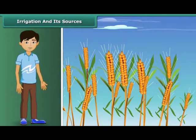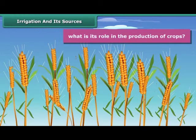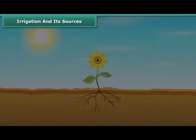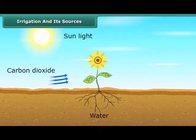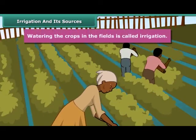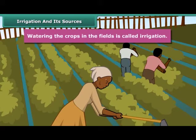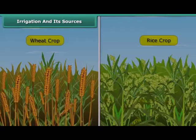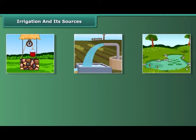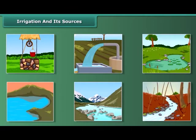Water is very essential for the production of crops. Germination of seeds cannot take place under dry conditions. Water is absorbed by plant roots, along with minerals and fertilizers. Watering the crops in the fields is called irrigation. The time and frequency of irrigation varies from soil to soil, crop to crop, and season to season. Sources of irrigation include wells, tube wells, ponds, lakes, rivers, dams, and canals.